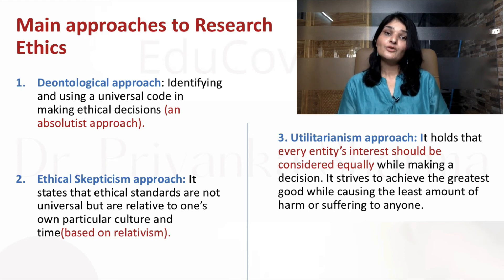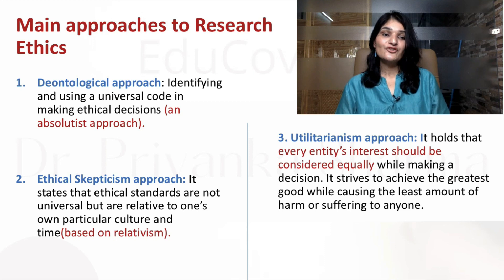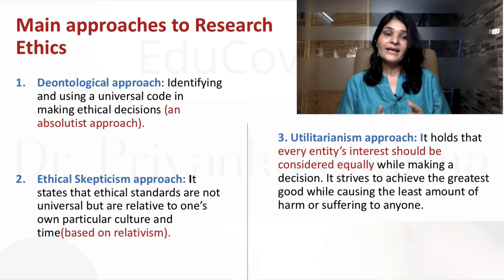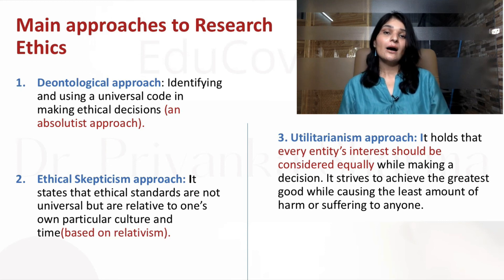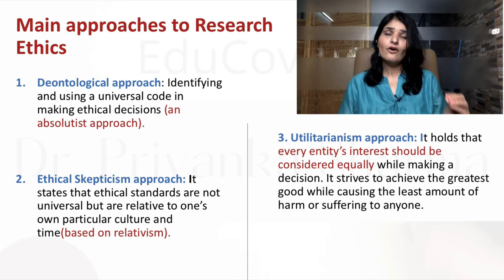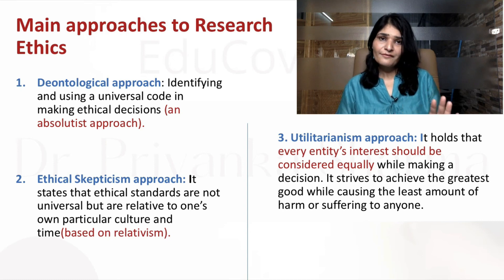The third is the utilitarianism approach. In this approach, researchers think that any research should have utility — it should be beneficial to society. It holds that every entity's interests should be considered equally while making a decision. It strives to achieve the greatest good while causing the least amount of harm or suffering to anyone. The basic and sole purpose of research should be to benefit society and not cause any harm to nature — whether physical, human, animal, or any object. No harm should be caused during research. These were the three main approaches you should know at the surface level, as they can be asked in the exam.